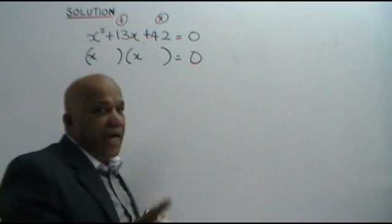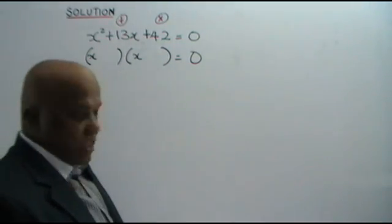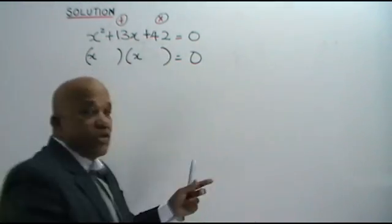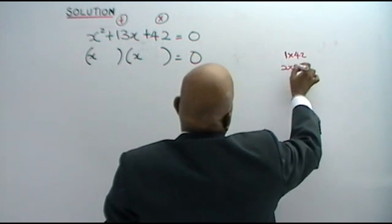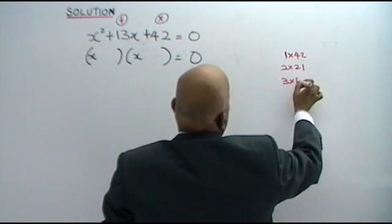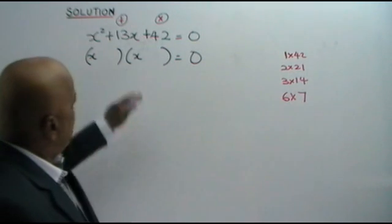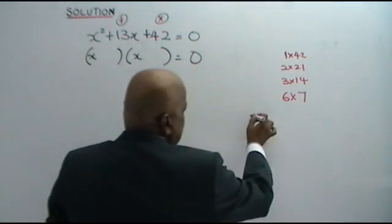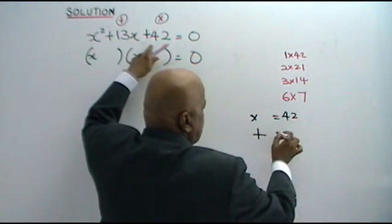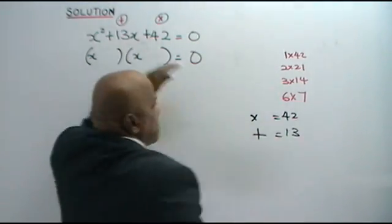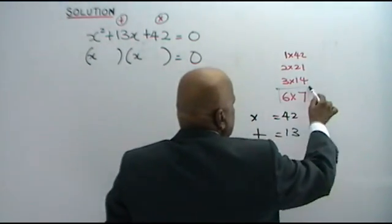Find the correct pair of numbers. We start with the product first — what are the possibilities which will give you 42? These are the possibilities: 1 times 42, 2 times 21, 3 times 14, 6 times 7. But we need two numbers that when multiplied together give 42, and when added together give 13.